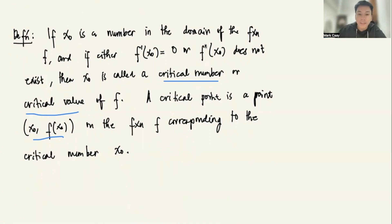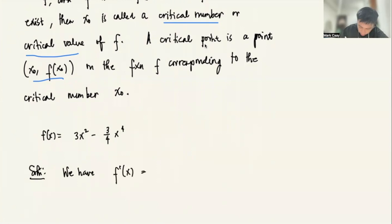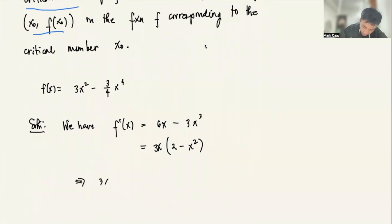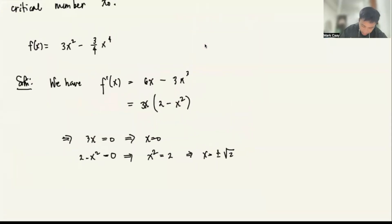Let's do an example. Let f(x) = 3x² − (3/4)x⁴. To find the critical values, first we take the derivative: f′(x) = 6x − 3x³. We can factor this as 3x(2 − x²). Setting each factor to zero: 3x = 0 implies x = 0, and 2 − x² = 0 implies x = ±√2. So the critical numbers are −√2, 0, and √2.